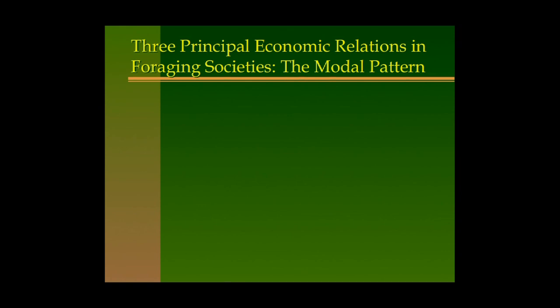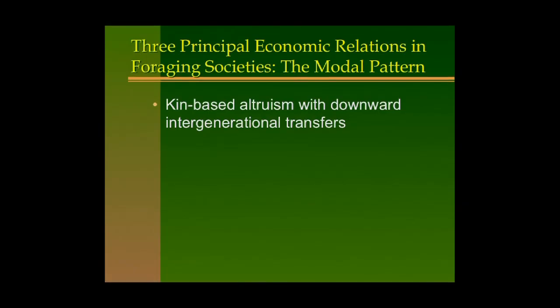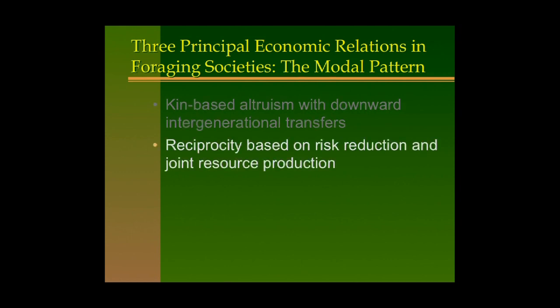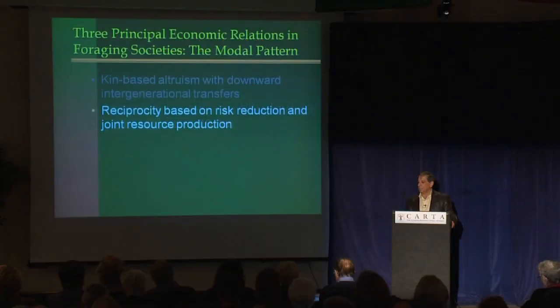We'll be arguing that there are three principal economic relations in foraging societies. This is a modal pattern, meaning that most groups show it, but not all. The three principles are: kin-based altruism with downward intergenerational transfers from grandparents to parents, parents to children, and grandparents to grandchildren; reciprocity based upon reducing risk of variance in day-to-day diet and joint resource production; and cooperative foraging.